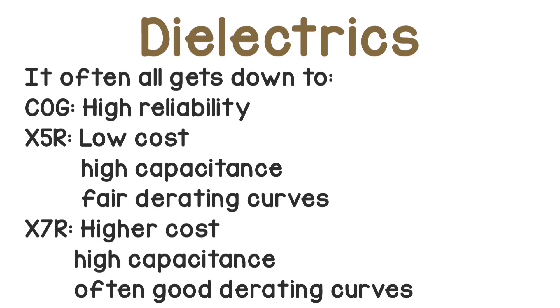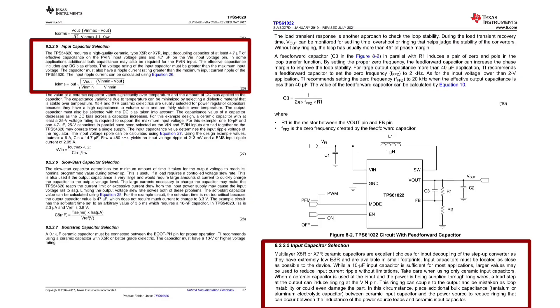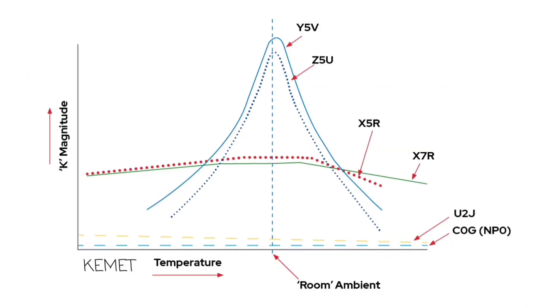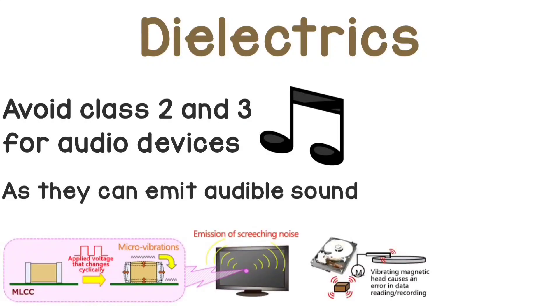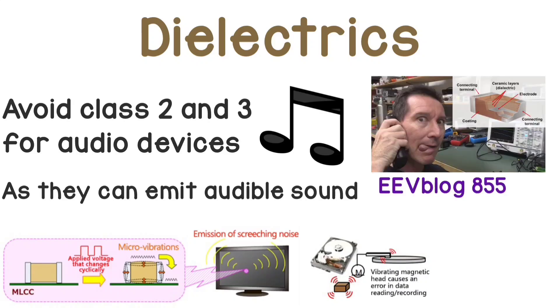The last two are frequently used as input and output capacitors in DC-DC converters. These are some dielectrics compared. Another thing that you have to keep in mind is that if you are designing audio devices, you should avoid class 2 or 3 capacitors, as they exhibit a piezoelectric effect, and also those capacitors can emit audible sounds. EEVblog has a great video on it, link in the description.